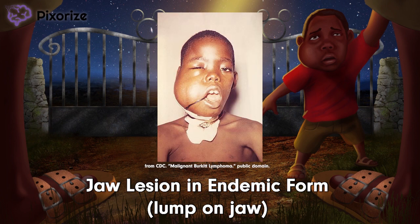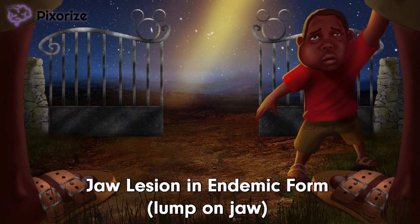In endemic Burkitt lymphoma, the tumor can invade the facial bones, especially the jaw. A classic picture you should recognize for test day is that of a unilateral jaw lesion. As opposed to the endemic type of Burkitt, sporadic Burkitt lymphoma typically develops in the pelvis or abdomen. It's not likely you'll see a question about sporadic Burkitt lymphoma, so just remember the jaw lesion.